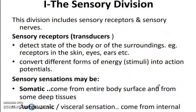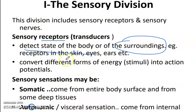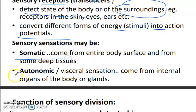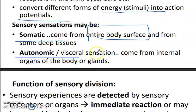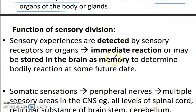In the sensory division, receptors detect the state of the body or its surroundings — for example, skin, eyes, and ears convert different forms of energy into action potentials. Sensory sensations can be somatic or autonomic and come from the entire body surface and some deep tissues. Visceral sensations come from the internal organs of the body or glands.